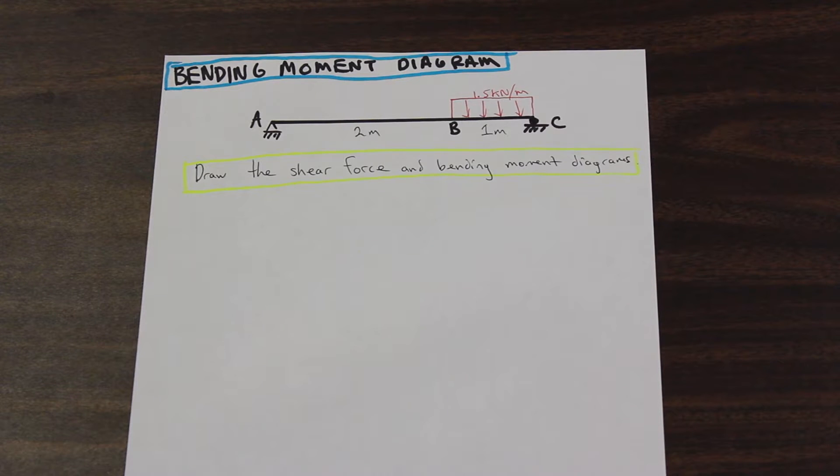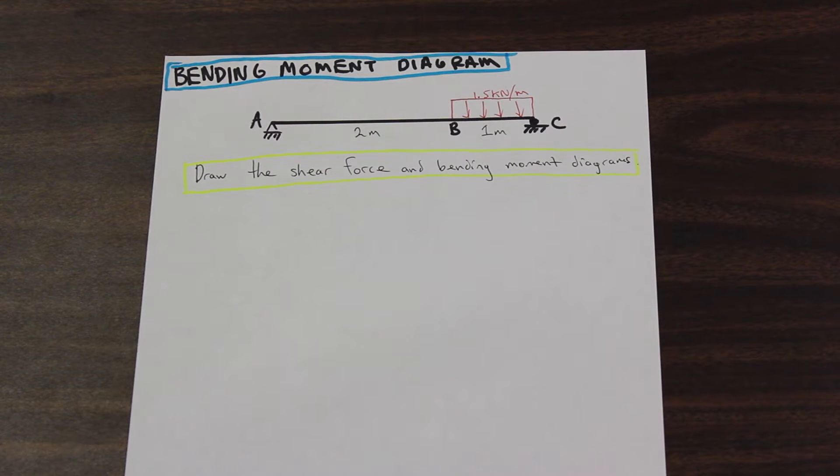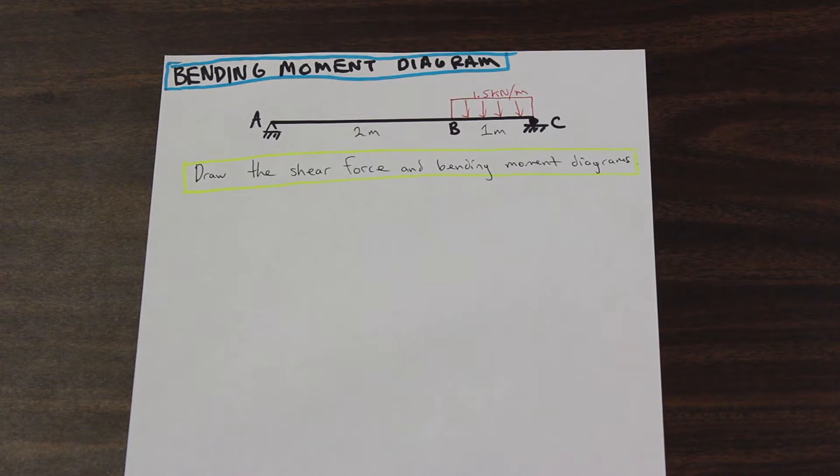We're back and we are going to be solving a bending moment diagram. So what a bending moment diagram essentially is, it's a graphical representation of how a beam reacts to its external forces both in shear and in moment.